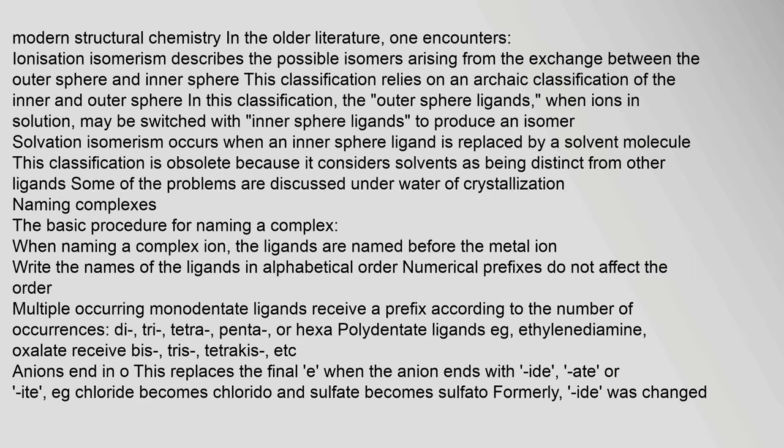In the older literature, ionization isomerism describes the possible isomers arising from the exchange between the outer sphere and inner sphere. Solvation isomerism occurs when an inner sphere ligand is replaced by a solvent molecule. This classification is now considered obsolete because it regards solvents as distinct from other ligands.